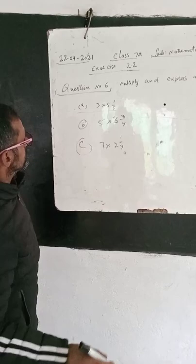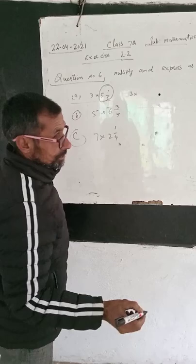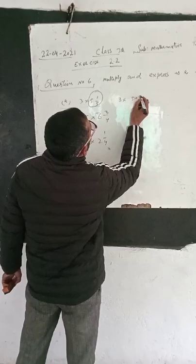For the first time we multiply this mixed fraction, we will change it. First of all, we will change it into improper fraction. The denominator is multiplied by this number, multiply by 5, and plus 1 divided by 5.